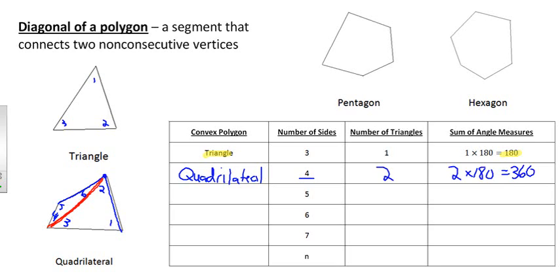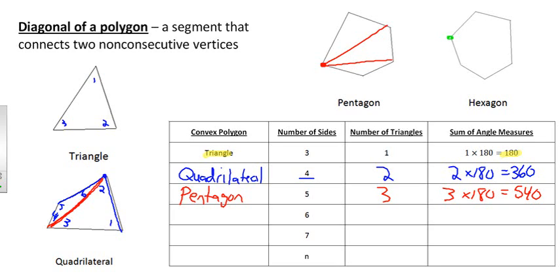We can do that same thing with all other polygons. With a pentagon, if I pick any vertex and draw all the diagonals in from that vertex, I've made three triangles. So a pentagon is three triangles, and three times 180 is 540 degrees. Continuing that process with a hexagon, drawing all diagonals from one vertex creates four triangles, and four times 180 is 720 degrees.